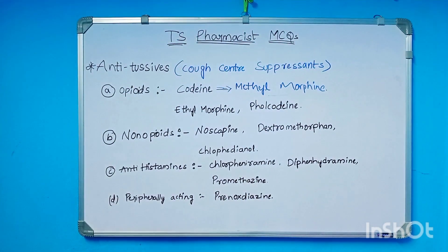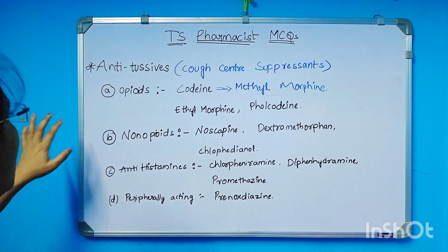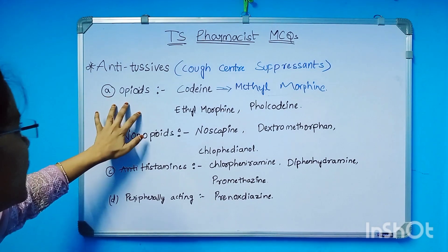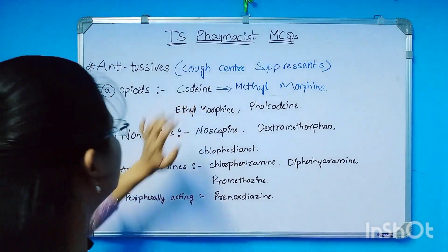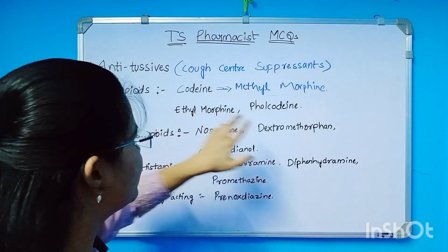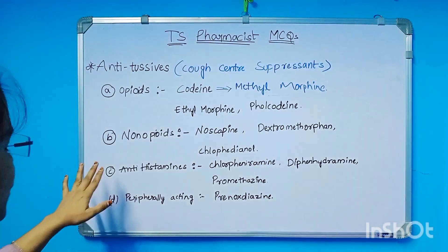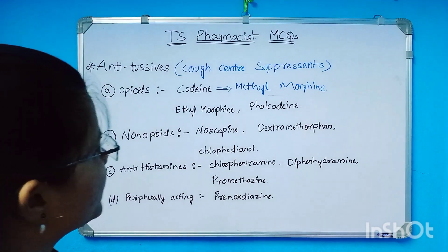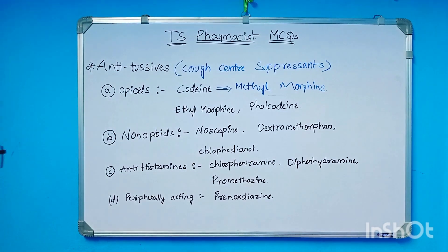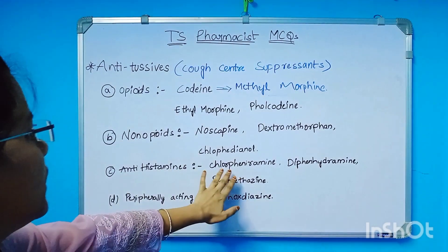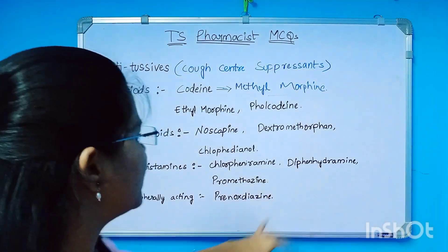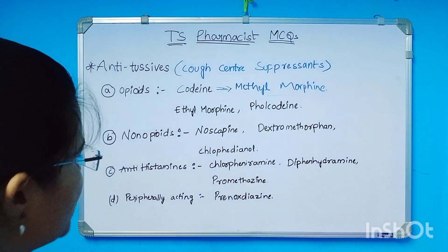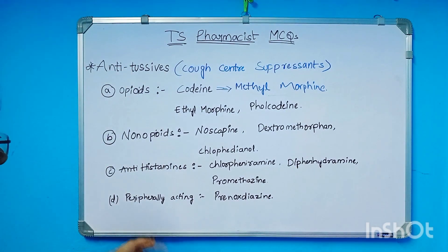For the antitussive classification, there are three categories. First, opioids: Codeine, Ethylmorphine, Pholcodine. Second, non-opioids: Noscapine, Dextromethorphan, Chlophedianol. Third, antihistamines: Chlorpheniramine, Diphenhydramine, Promethazine. And peripheral acting: Prenoxdiazine.